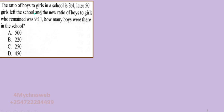We are told that this school has a certain population of students — boys and girls — and the ratio is 3:4. What does this mean? For every three boys you have four girls. After some time, 50 girls leave the school, so we have a new population of students. This makes the ratio of boys to girls change to 9:11 — in other words, for every nine boys you will have eleven girls.